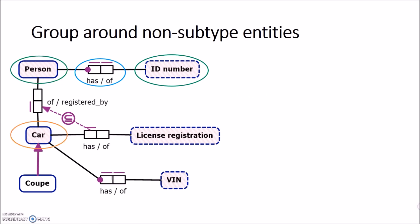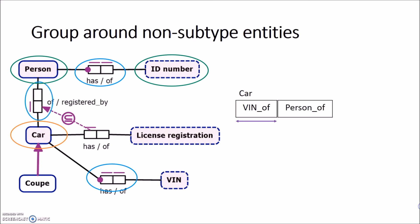Now let's create a table for 'car'. Car has three fact types linked to it. First is VIN — it's a lexical object type and identifying on the side of VIN, so this will be marked as a candidate key. It's also mandatory, so no parentheses and no horizontal bar. Next is 'person of' — person is a non-lexical object type, so we mark this with a horizontal bar. It's not identifying on the side of person, so no candidate key. It's an optional role, so we add parentheses. The last identifying fact type is 'license registration' — it's not identifying on the side of license registration, so no candidate key. It's a lexical object type, so no horizontal bar, and it's an optional role, so we add parentheses.